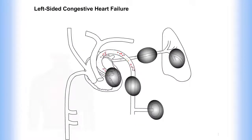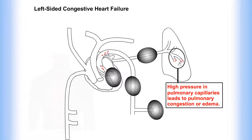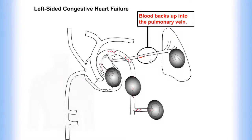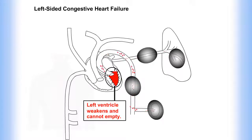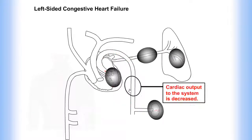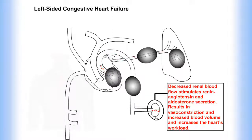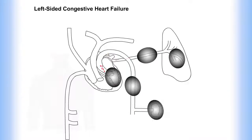Left-sided congestive heart failure. High pressure in pulmonary capillaries leads to pulmonary congestion or edema. Blood backs up into the pulmonary vein. The left ventricle weakens and cannot empty. Cardiac output to the system is decreased. Decreased renal blood flow stimulates renin-angiotensin and aldosterone secretion, resulting in vasoconstriction and increased blood volume, which increases the heart's workload.